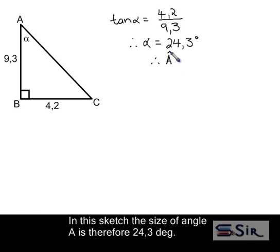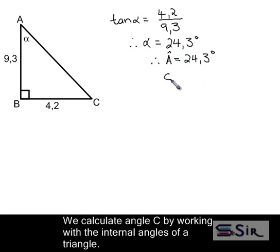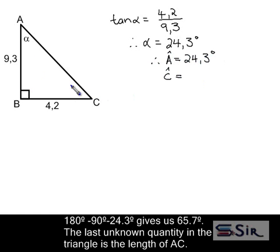In this sketch, the size of angle A is therefore 24.3 degrees. We calculate angle C by working with the internal angles of a triangle. 180 degrees minus 90 degrees minus 24.3 degrees gives us 65.7 degrees. The last unknown quantity in this triangle is the length of AC.